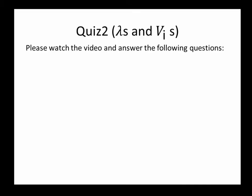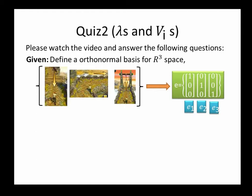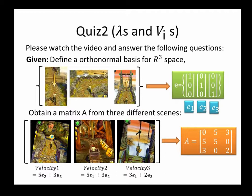Here is a three-dimensional space. We define it with a normal space in three directions. E1 means going straight, E2 represents making a turn, E3 stands for a jump. We can obtain a matrix from three different things. The columns of A means the velocity vector in different positions.